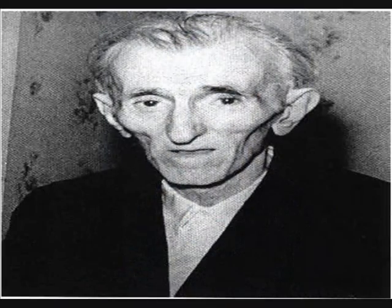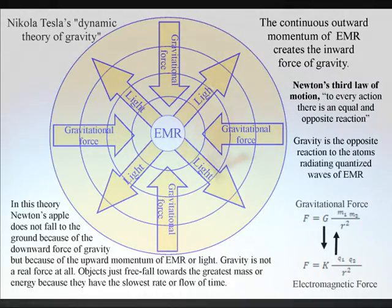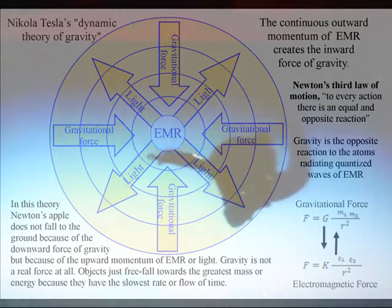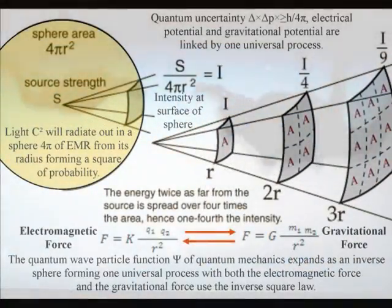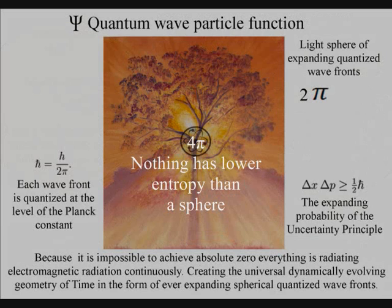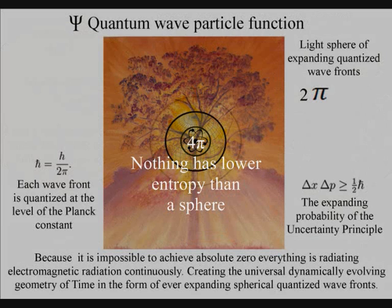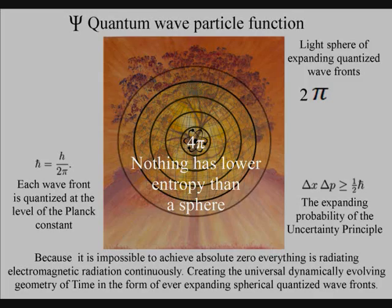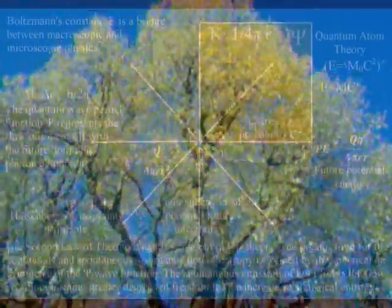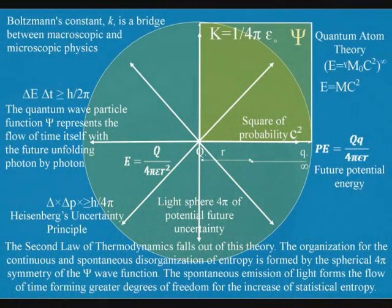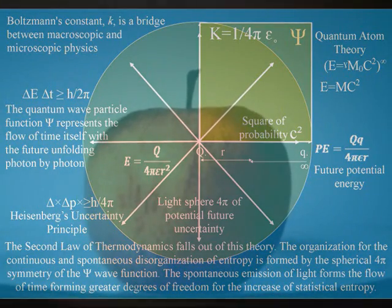In this theory, gravity is a secondary force to the electromagnetic force. Objects just freefall towards the greatest mass or energy because it has the slowest rate that time flows. The second law of thermodynamics falls out of this theory. The organization for the spontaneous disorganization of entropy is formed by the spherical symmetry of the quantum wave particle function. The spontaneous absorption and emission of light forms the flow of time with photon energy cascading down, forming greater degrees of freedom for the flow of entropy.